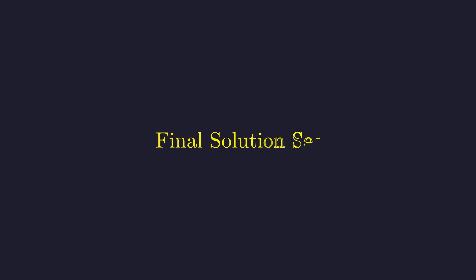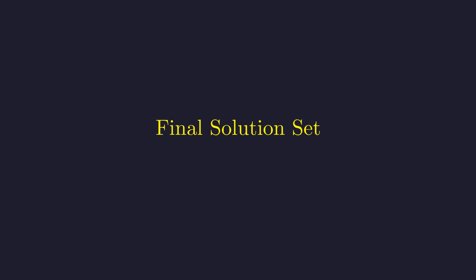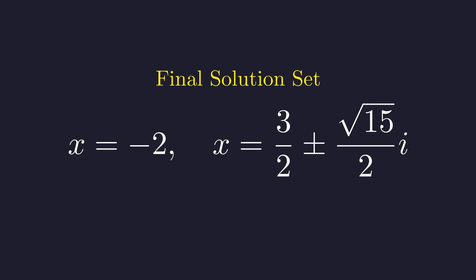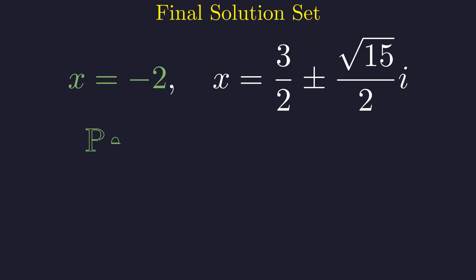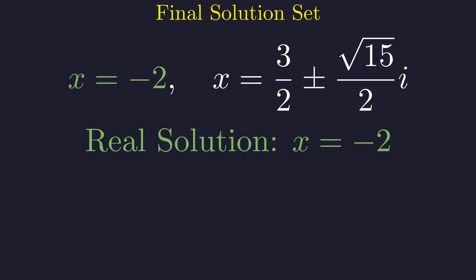Let's summarize our complete solution. For the equation x squared minus x cubed equals 12, there are three solutions in the complex number system. Of these, there is only one real solution: x equals negative 2.